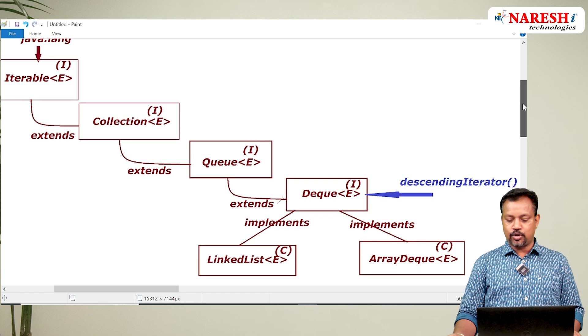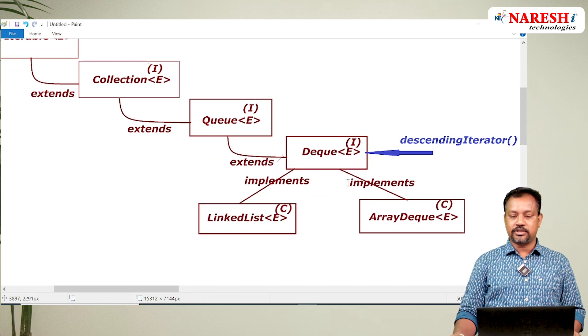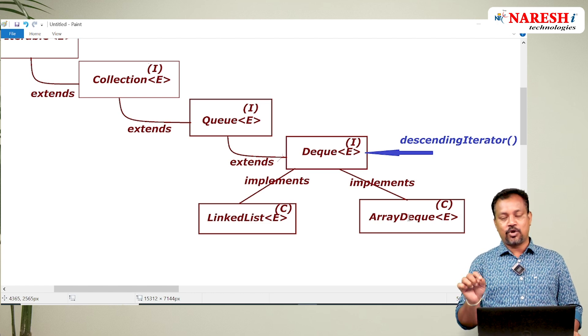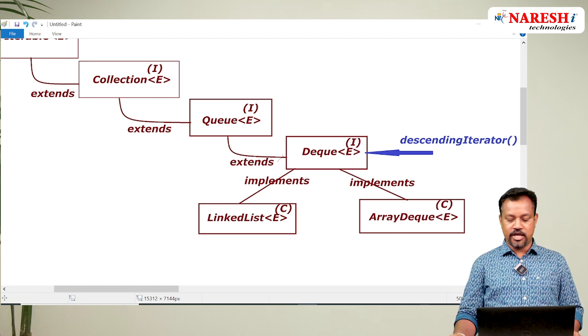This Deque has two implementations: one is LinkedList, one is ArrayDeque. LinkedList and ArrayDeque are the implementation classes of Deque.